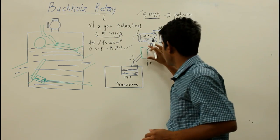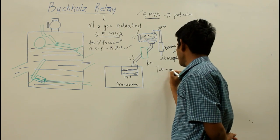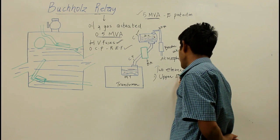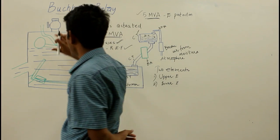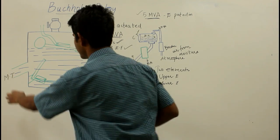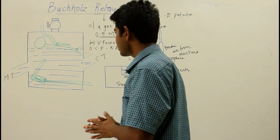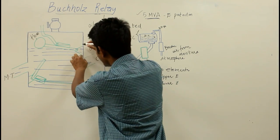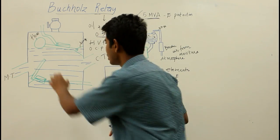Now discussing the construction of the Buchholz relay: it mainly consists of two elements — the upper element and the lower element. The upper element is on the conservator tank side and the lower element is on the main tank inlet side. The upper element consists of a float attached to a hinge in such a way that it can move up and down depending on the oil level.